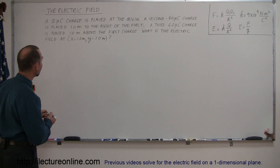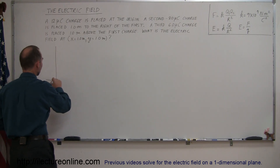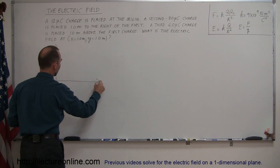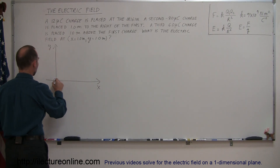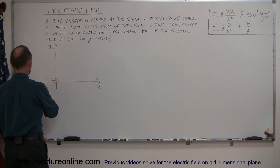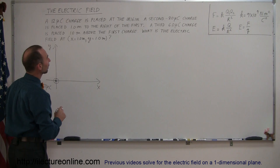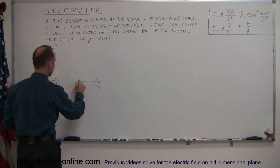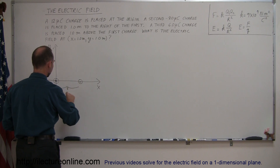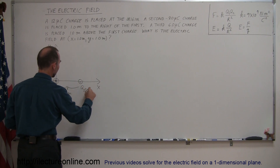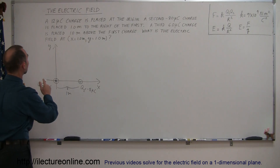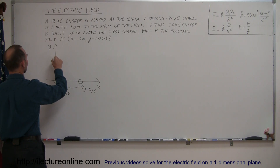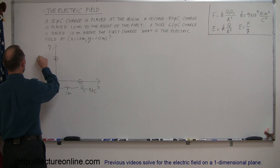Let's draw a diagram using the xy plane to get a feel of what this problem is about. There's our y-axis, there's our x-axis. We place our charges: q1 equals 12 microcoulombs, a positive charge at the origin. We have a second charge placed to the right at a distance of one meter — q2 equals minus 8 microcoulombs, a negative charge. And then we have a third charge placed directly above the first charge, one meter above — q3 equals 6 microcoulombs, another positive charge.